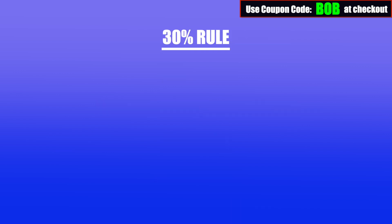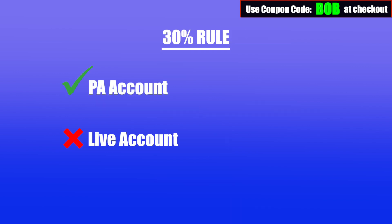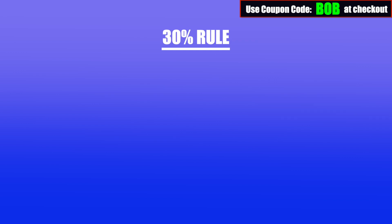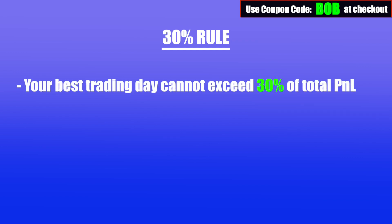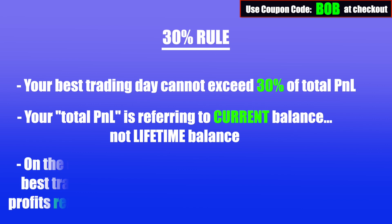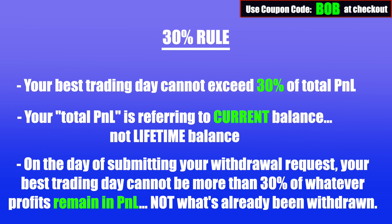So let's first talk about the 30% rule. This rule only applies to the PA account, not the live account. Once you transition to a live account you don't have to worry about this rule. However, you also don't have to worry about it in the PA account after your fourth month of withdrawals. The 30% rule states your best trading day cannot be more than 30% of your total P&L — that's profits and losses in your current balance, not the lifetime P&L of the account.